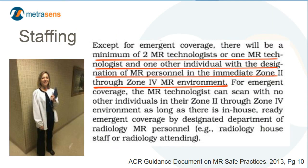The ACR guidance document on MR-safe practices addresses MR staffing. On page 10, the ACR states that except for emergent coverage, there will be a minimum of two MR technologists, or one MR technologist and one other individual with the designation of MR personnel — meaning Level 1 or Level 2 training — in the immediate Zone 2 through Zone 4 MR environment. One staffing model utilized by several clients is the use of MR tech aids. MR tech aids can be highly trained to perform all MR functions with the exception of screening, including turning the room around, screening patients, and positioning patients. Using a staffing model of MR tech and tech aid is a viable option for many facilities.